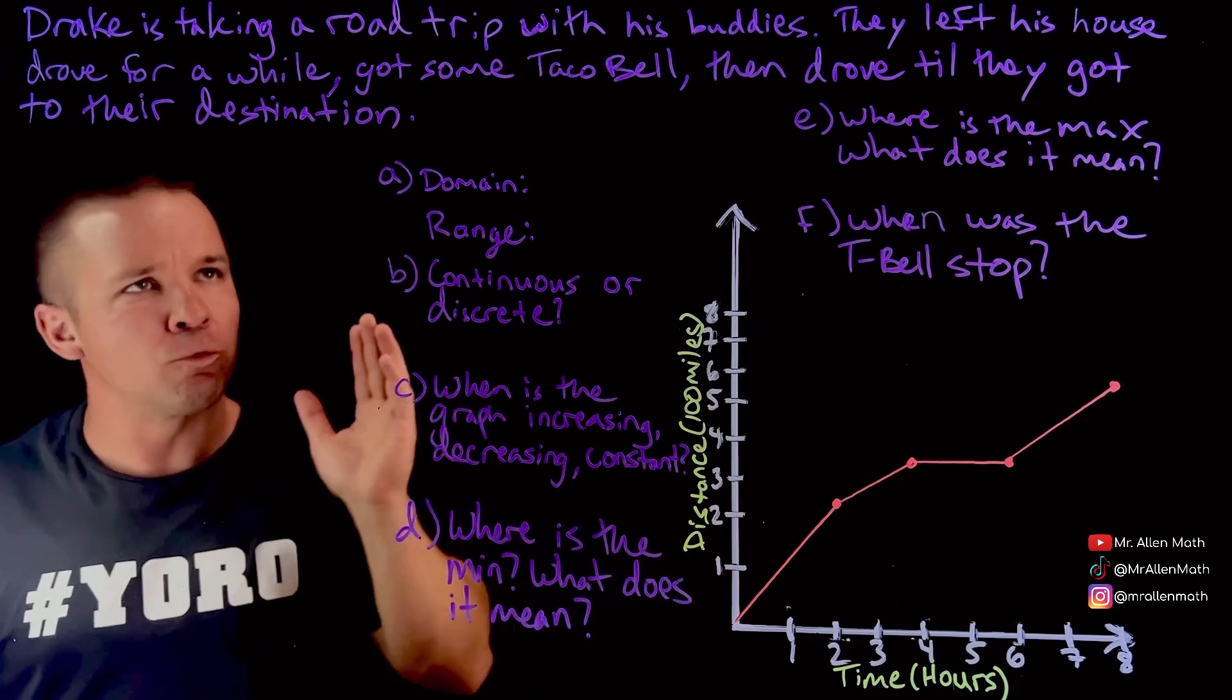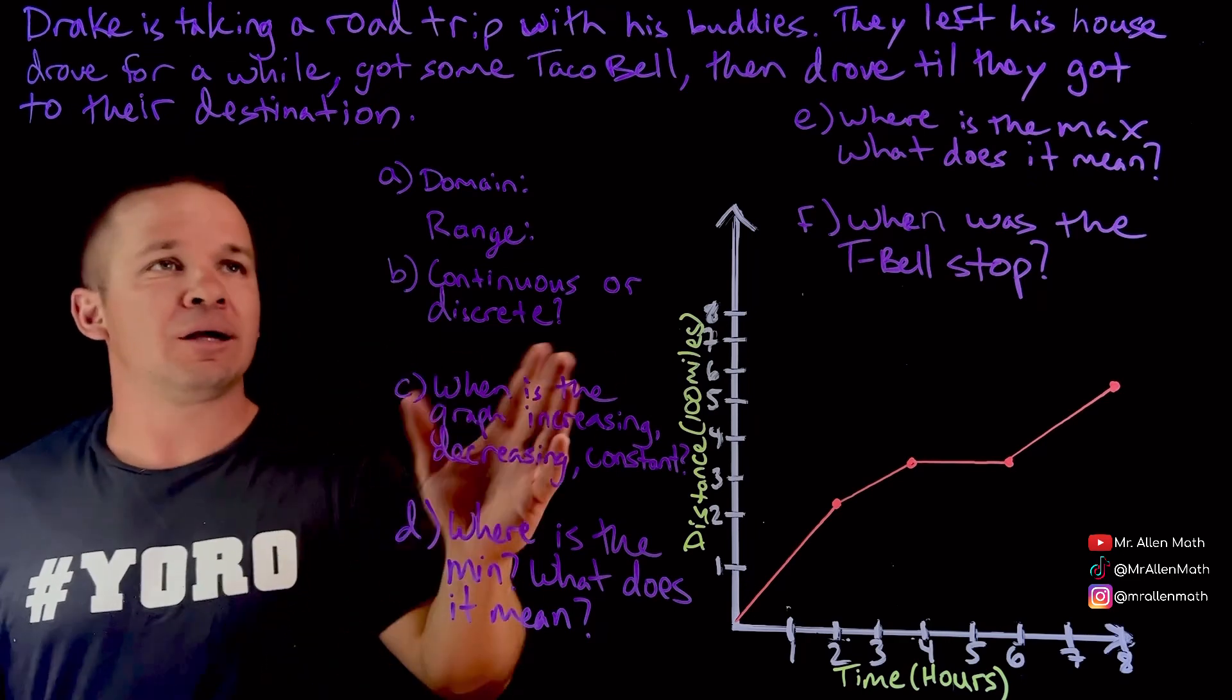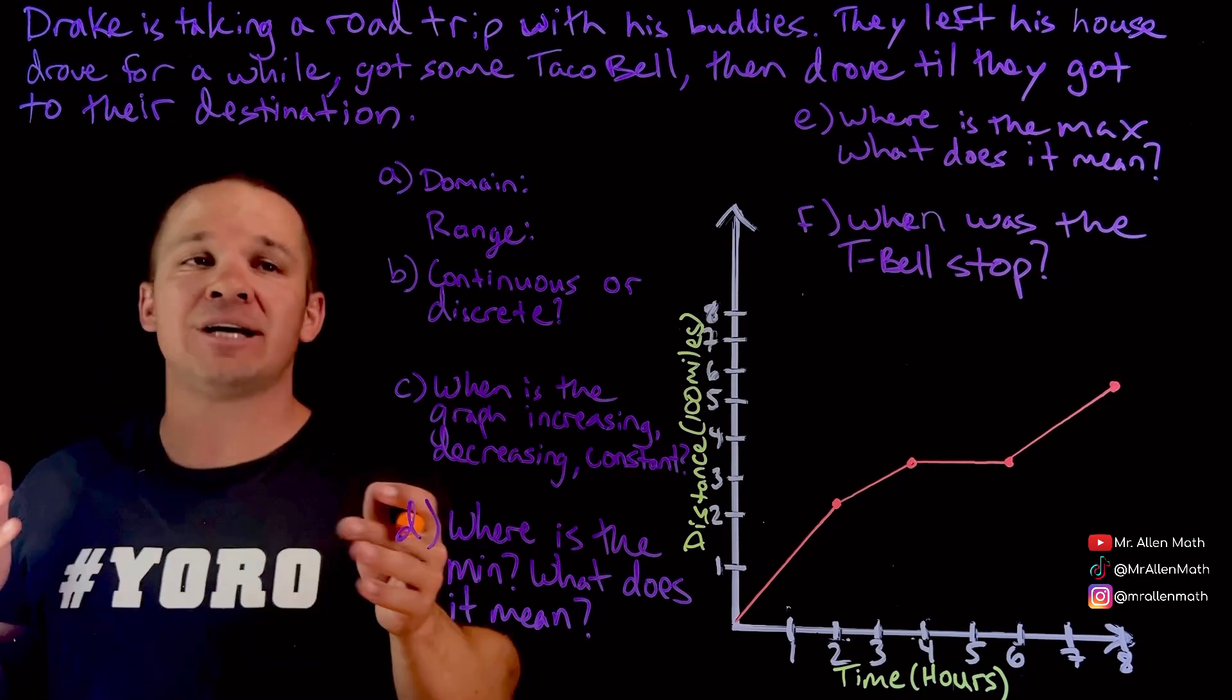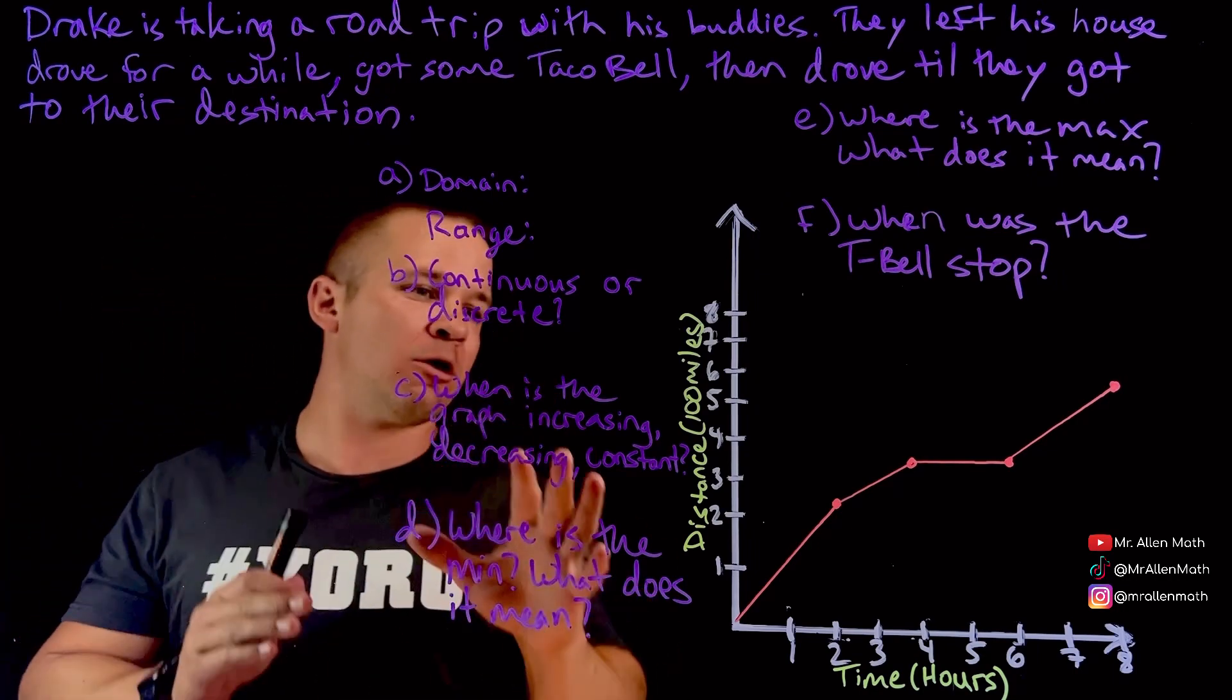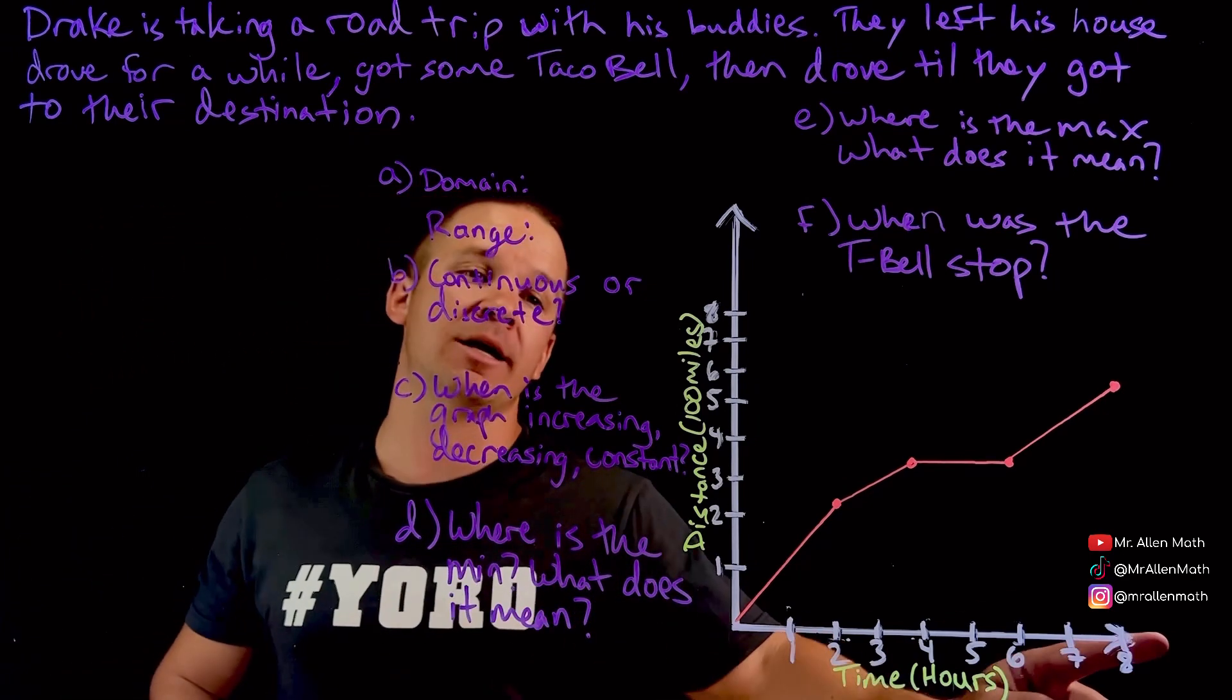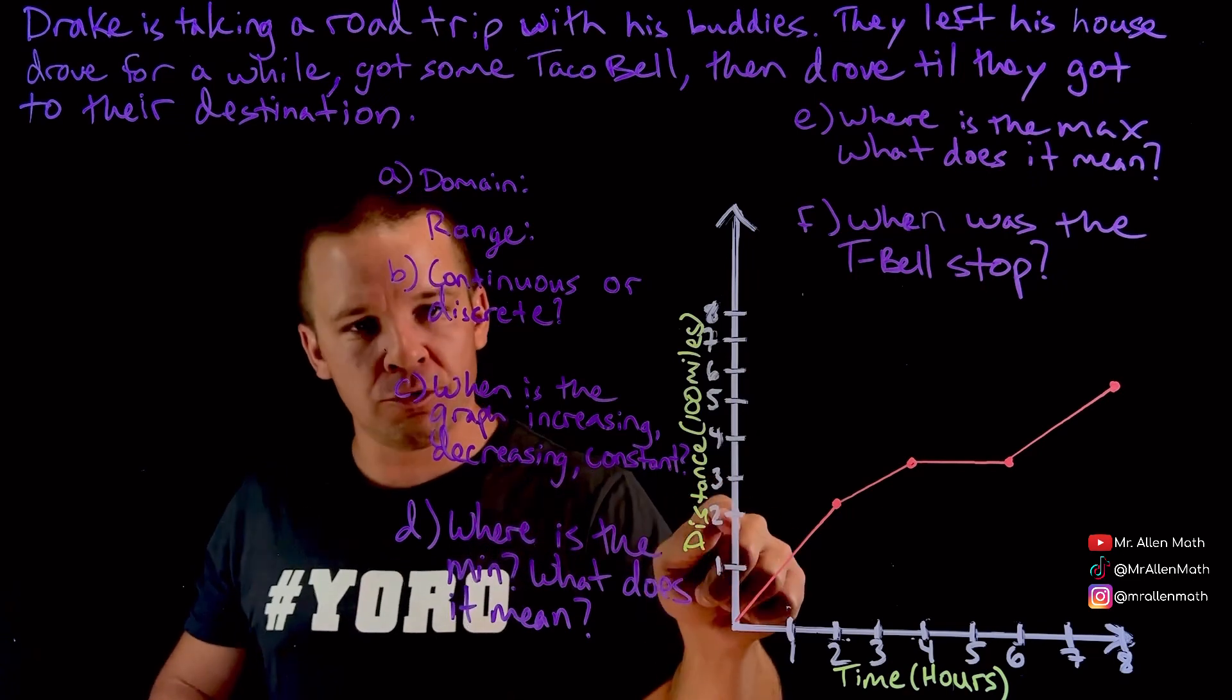Drake is taking a road trip with his buddies. They left his house and drove for a while, got some Taco Bell, of course, always on a road trip, right? And then drove till they got to their destination. Alright, we got a lot of questions about this graph here. Let's first take a look at the graph and see what's going on. We got our time in hours for our x-axis. We have our distance in 100 miles, so 100, 200, 300.